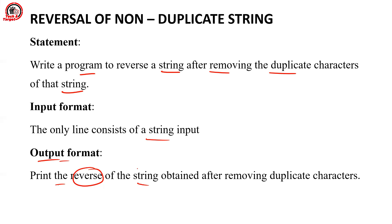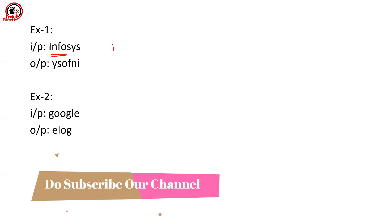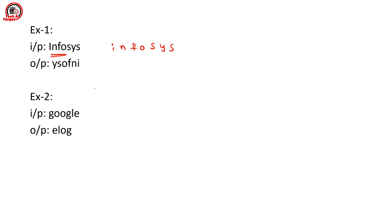Now we'll see some basic examples, then move on to the core part. The first example input is 'Infosys' and the expected output is 'YSOFNI'. The approach we are going to use: we start iterating from the first character of our given string, and to store the result, we keep a result string initialized as an empty string.